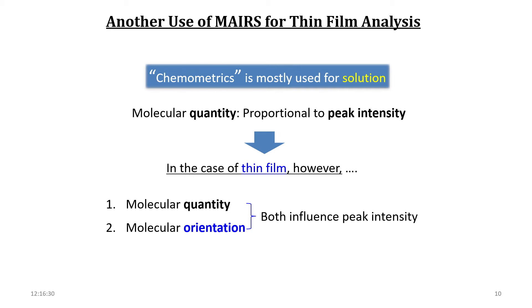Quantity analysis on chemometrics is mostly done for a solution sample. This is because the molecules are randomly oriented, and the band intensity is simply proportional to the molecular quantity in the solution sample. In the case of thin film analysis, however, molecular orientation also influences the band intensity as well as the molecular quantity via the surface selection rules.